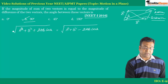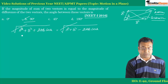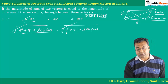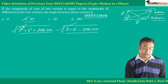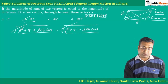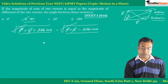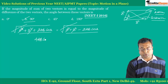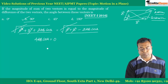Since the magnitudes are equal, we set A squared plus B squared plus 2AB cosθ equal to A squared plus B squared minus 2AB cosθ. A squared cancels, B squared cancels, and we get 4AB cosθ equals zero.